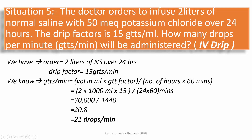The formula is: gtt per minute equals volume in ml multiplied by gtt factor, divided by number of hours multiplied by 60 minutes — because when converting hours to minutes we multiply by 60. The volume is 2 liters; from the matrix table, 1 liter equals 1000 ml, so we multiply by 1000. That gives us 2 × 1000 × 15 (the gtt factor), divided by 24 hours × 60 minutes.